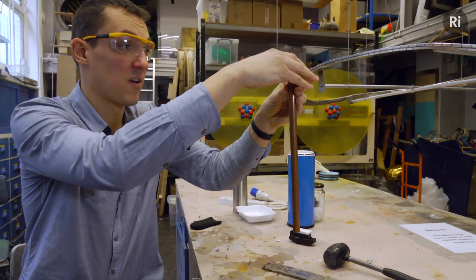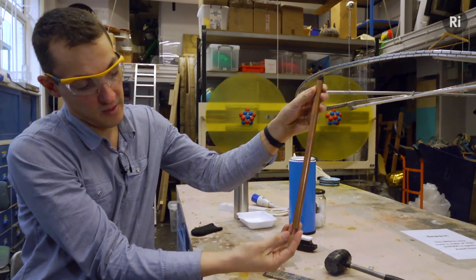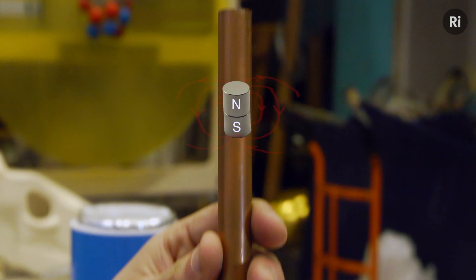It takes quite a long time. The reason that's happening is as the magnet moves through the copper, it induces electric currents in the copper. Those electric currents themselves have their own magnetic field.